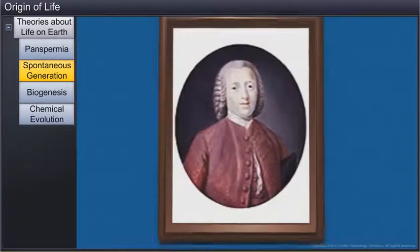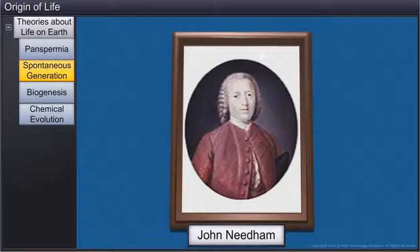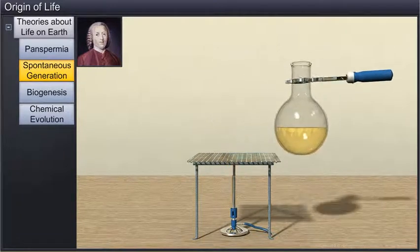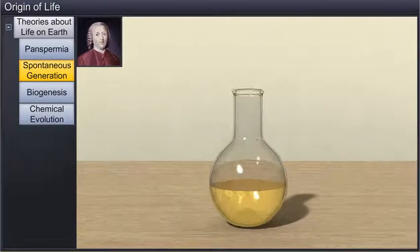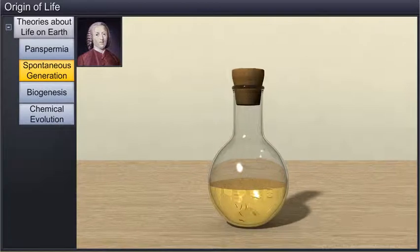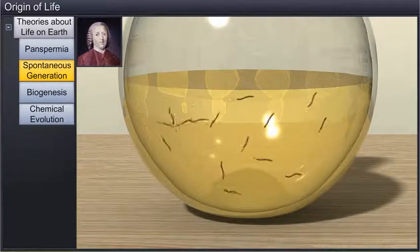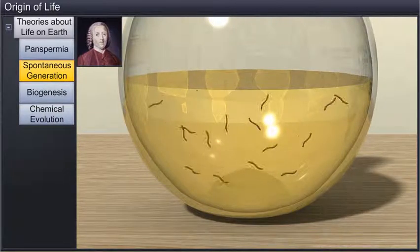Moreover, some scientists, such as John Needham, supported the theory of spontaneous generation by conducting some experiments. In one of his experiments, Needham boiled chicken broth in a flask, and then cooled it to room temperature in an open container. Later, he sealed this container. After a few days, he observed a few microbes in it. Needham believed that some life force had brought about this spontaneous generation in the chicken broth.